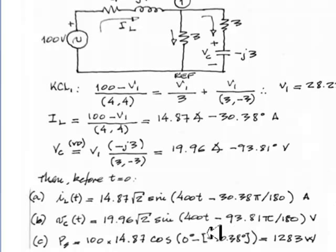minus the angle of the current, the phase of the voltage, 0 degrees, minus phase of the current, from here, negative 30 degrees. That is 1,283 watts, and that completes part A.